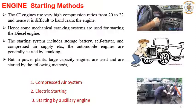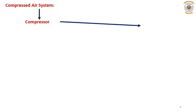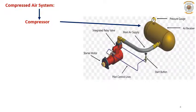We will see what those systems are, how and when we can employ them to start the diesel engine. First, we will take up the compressed air system. In compressed air system, a compressor supplies the air. You can see the line diagram here where the compressor receives the air, compresses it, and stores it.